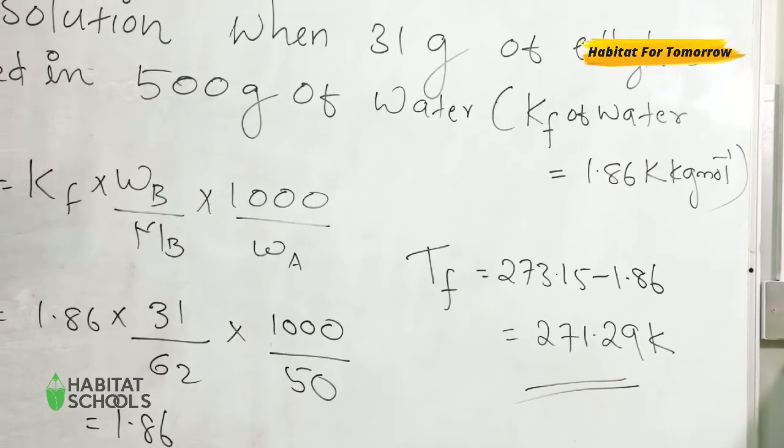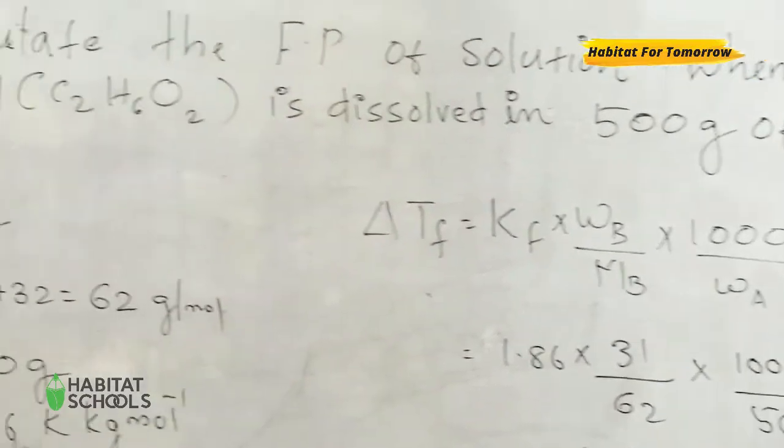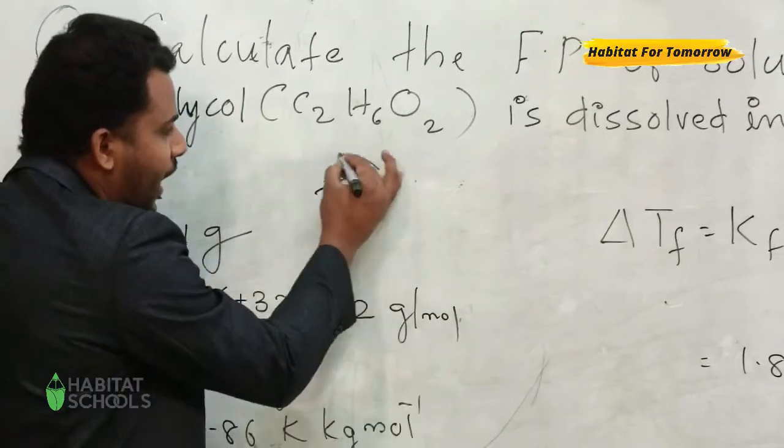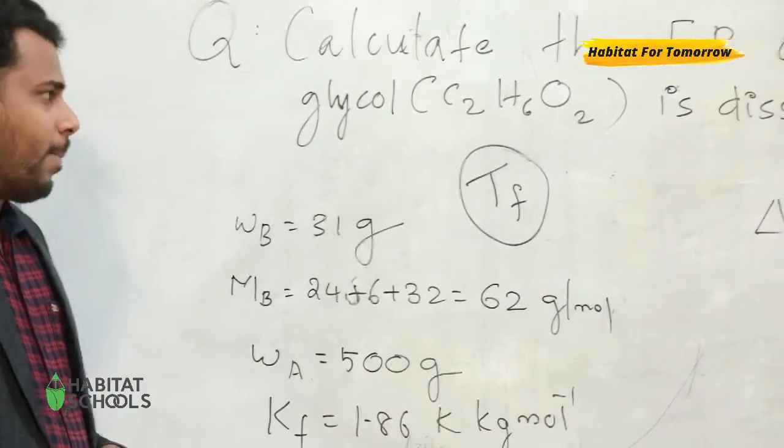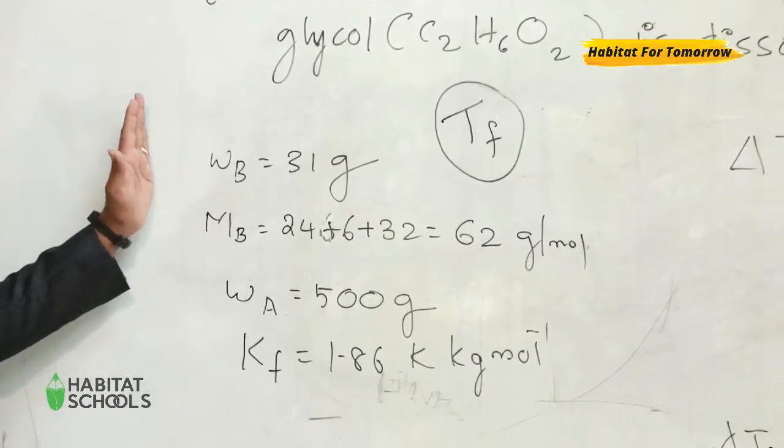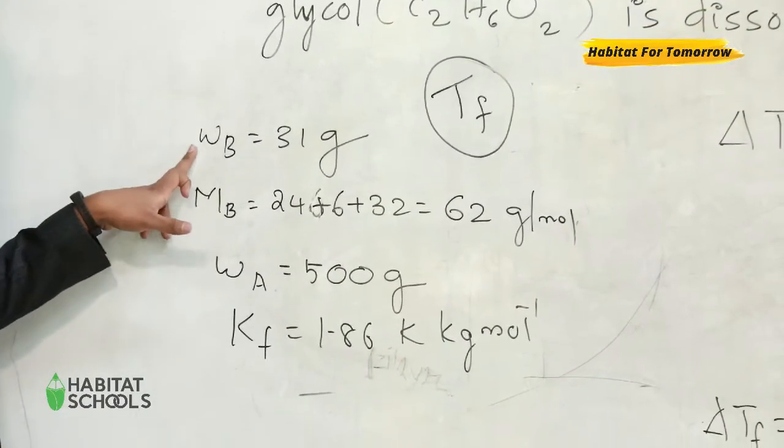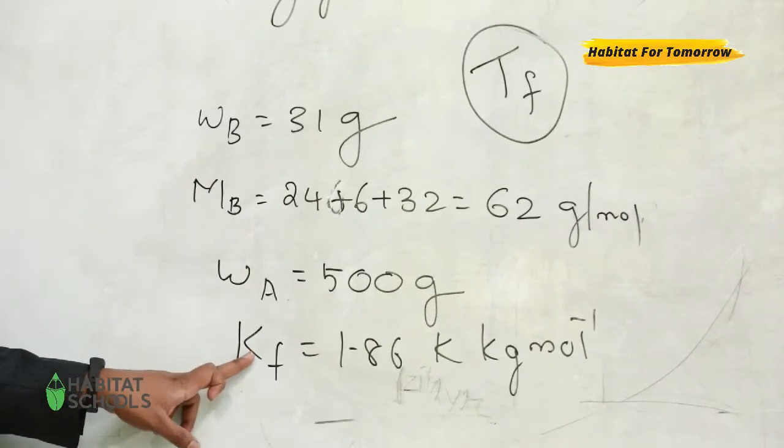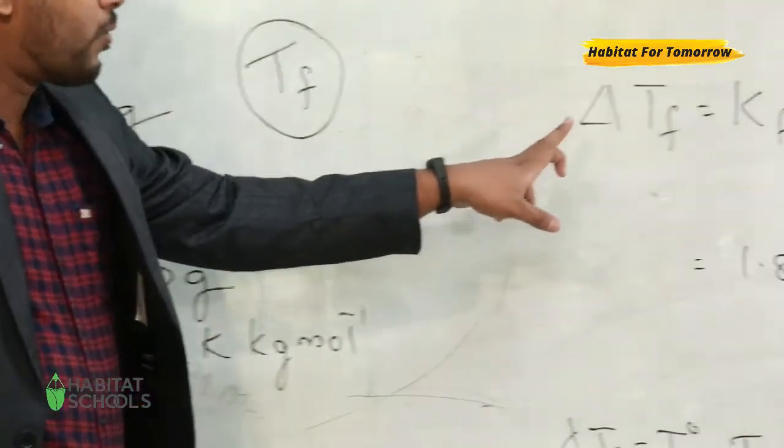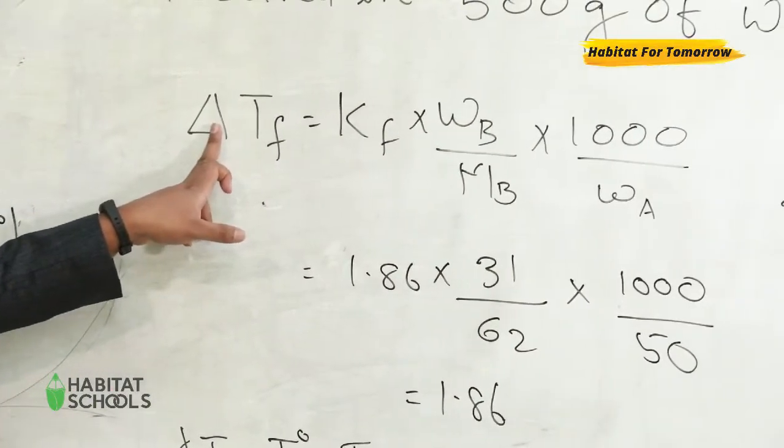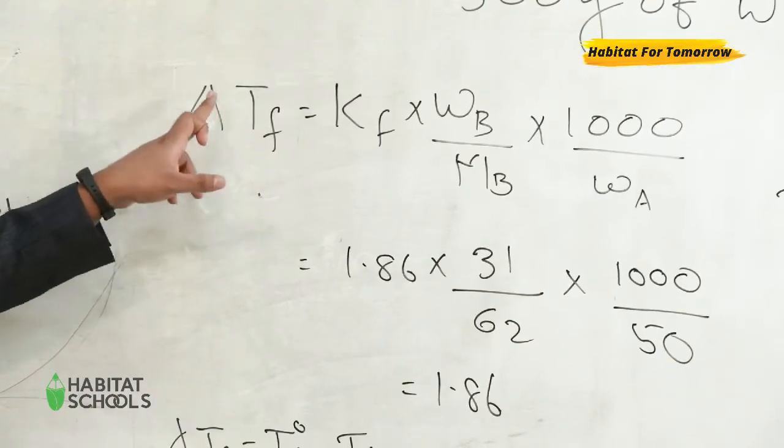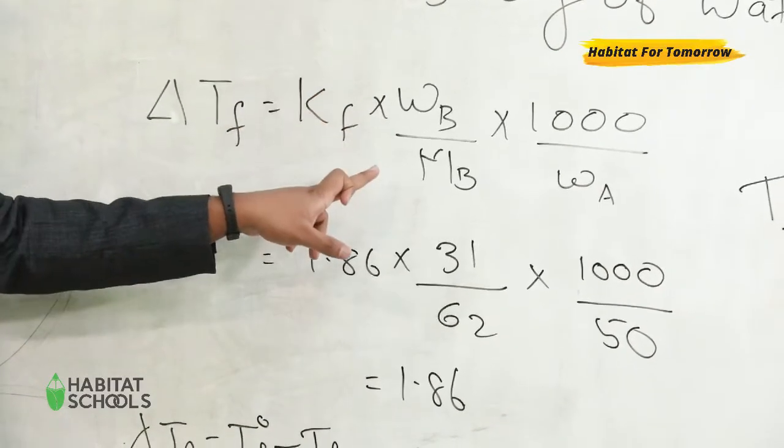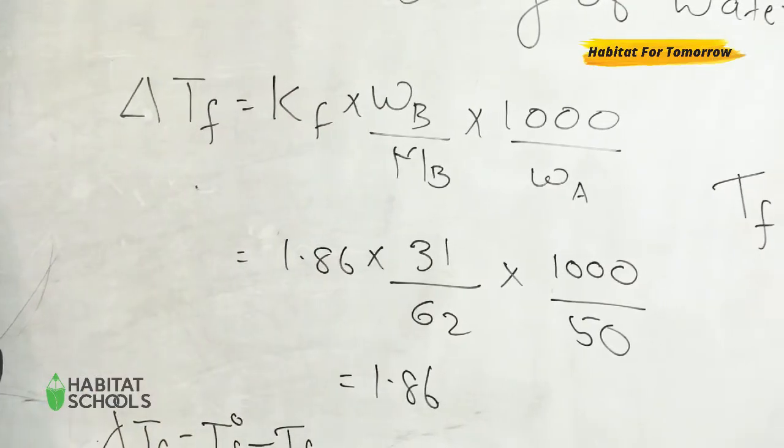Given: Kf of water is equal to 1.86. Again, you have to check the unit of Kf also—Kelvin kilogram mole inverse. Here in the question we have to calculate the freezing point of the solution, that is Tf. So the first step: you have to write what are the given data. Wb is given, Mb is given, Wa is given, and Kf is given. So first we have to calculate what is the depression in freezing point, ΔTf, using the equation Kf into Wb divided by Mp into 1000 divided by Wa.